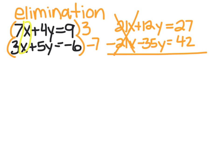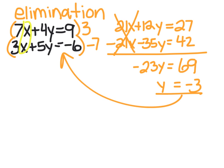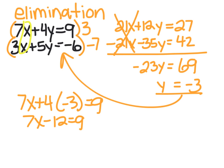Negative 7 times 5 is minus 35y, equals negative 7 times negative 6 is positive 42. Then we just add the two lines together. These cancel out — they eliminate. 12 minus 35 is negative 23y, and 27 and 42 makes 69. So we divide both sides by 69, and we get negative 3 for the y. Then you can plug this y into either one of your originals — we'll go with 7x plus 4y equals 9. So 7x minus 12 equals 9, 7x equals 21, and x equals 3. So we have our ordered pair 3, negative 3.